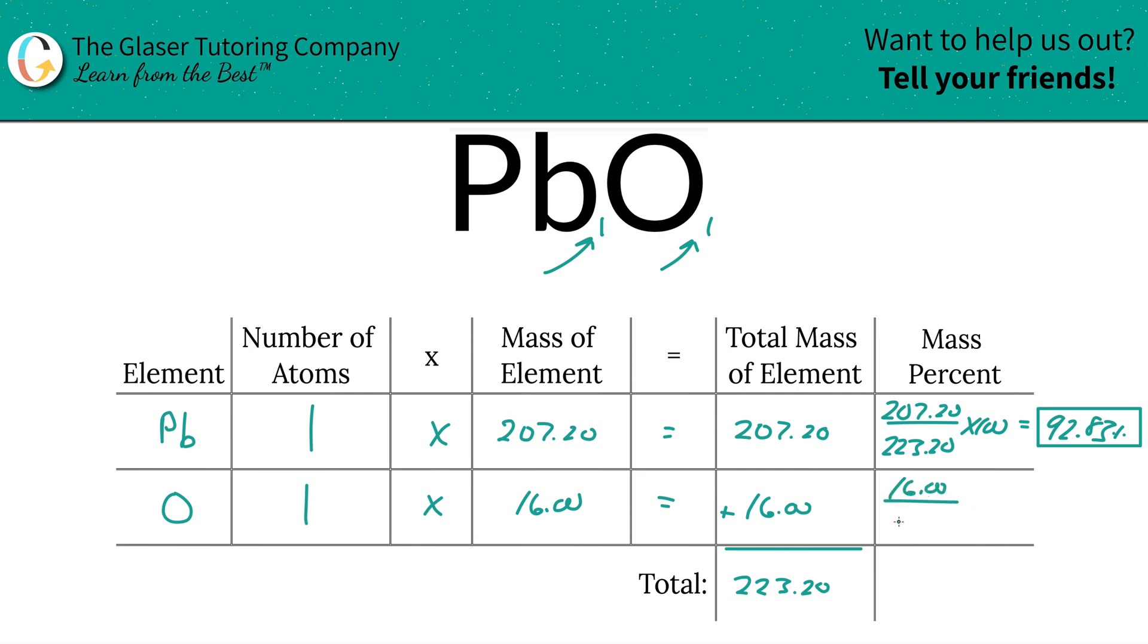So then we're going to take the total mass of that oxygen divided by the total mass of the compound, right? And then multiply that by 100. By the way, that's a simple percent calculation: part over whole times 100. And then the percentage here will be roughly 7.17%.